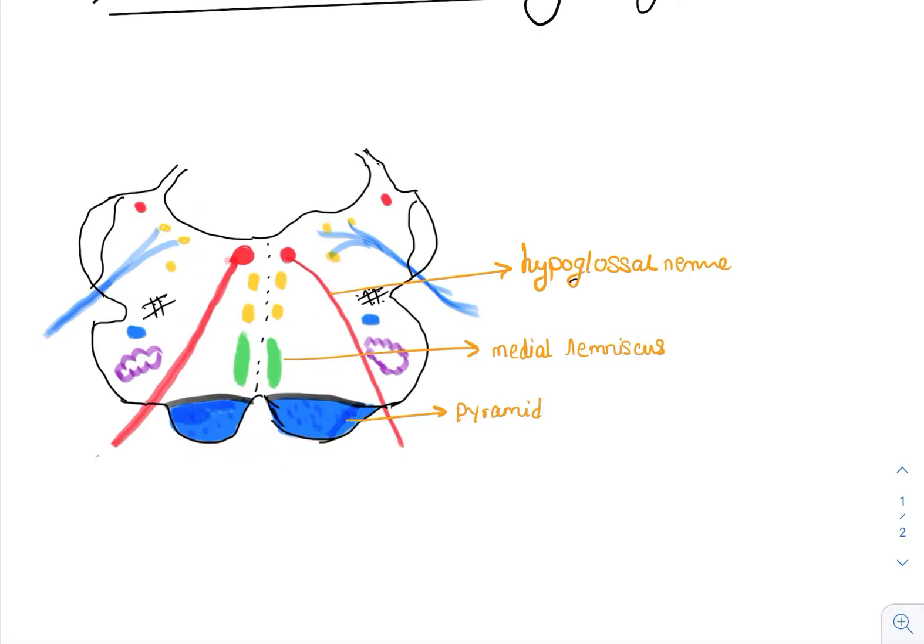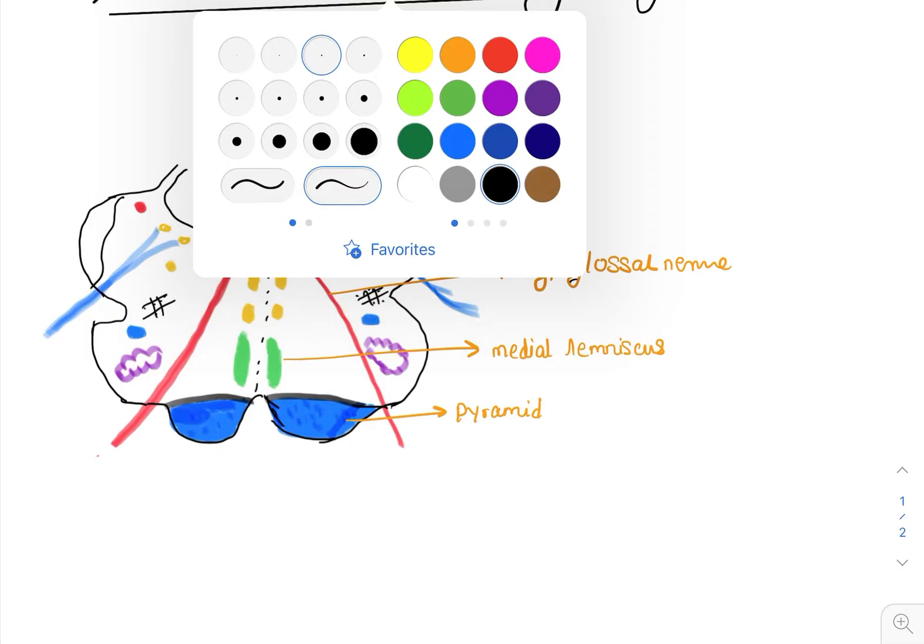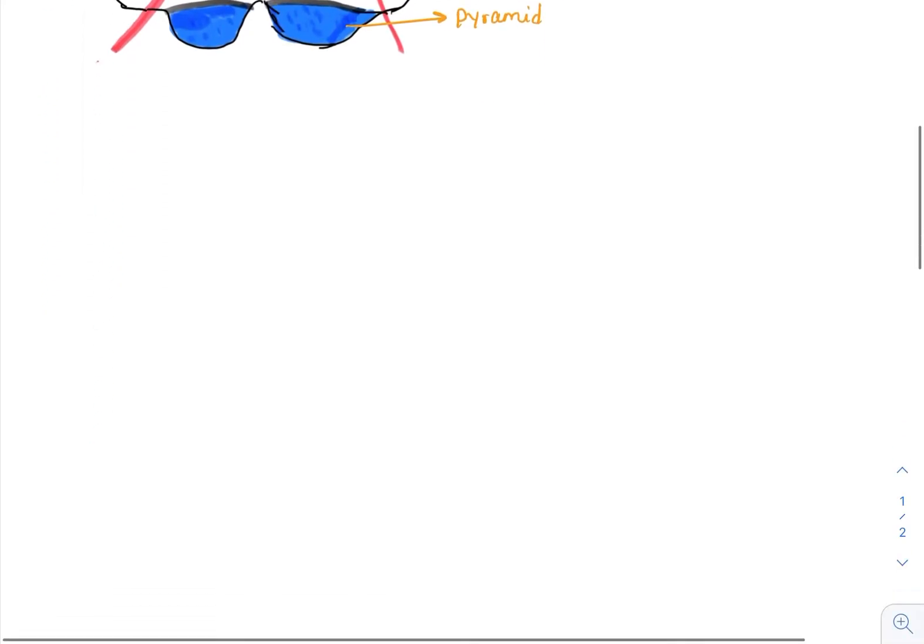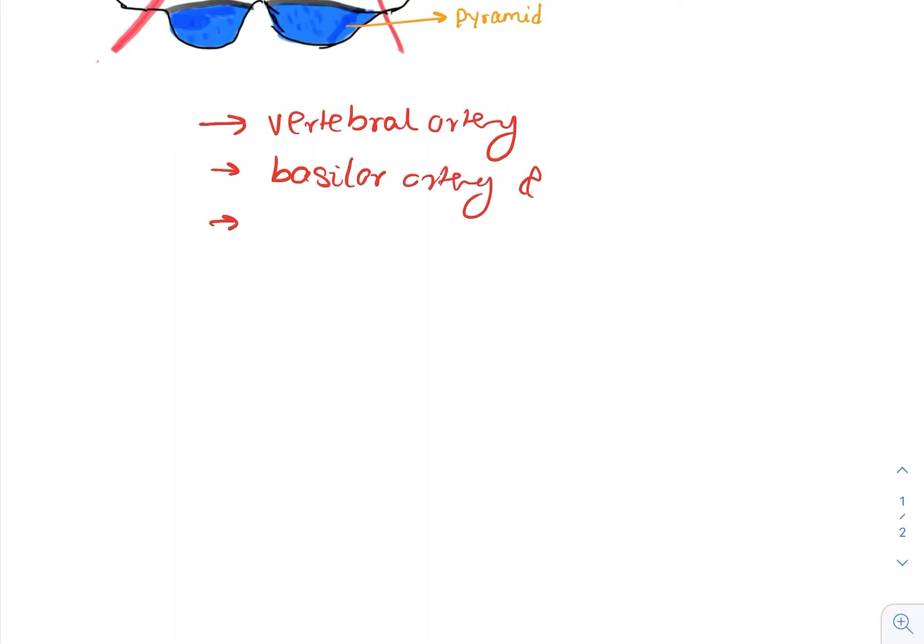These structures are affected in medial medullary syndrome. Before discussing symptoms, we must know that it is due to infarction or reduced blood supply to the medulla. The medulla is supplied by branches from the vertebral artery, basilar artery, and anterior spinal artery. We should keep in mind that most of the blood supply is from the vertebral artery.